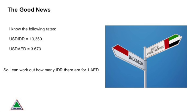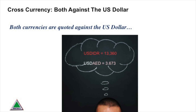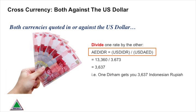We can see from our screen what the rupiah and dirham rates are to the US dollar, so now we can work out the dirham-rupiah cross rate. Both the rupiah and the dirham are quoted against the dollar, the dollar being the base currency. When this is the case, we simply divide one by the other. I want to see how many rupiah there are to the dirham, so I divide the rupiah FX rate by the dirham FX rate, and here we find that one dirham gets you 3,637 rupiah.